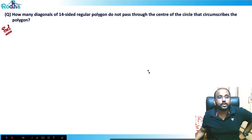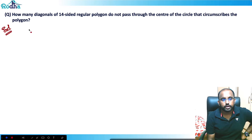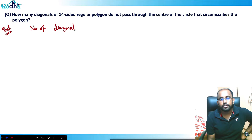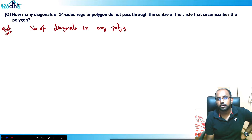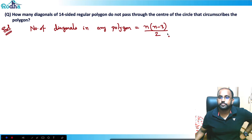Look at the first question. The question says: how many diagonals of a 14-sided regular polygon do not pass through the center of the circle that circumscribes the polygon? First of all, we should know the formula for the number of diagonals. Number of diagonals in any polygon is equal to n(n-3)/2.